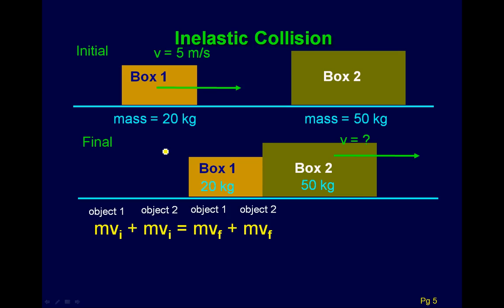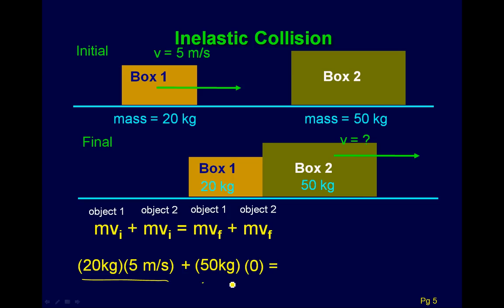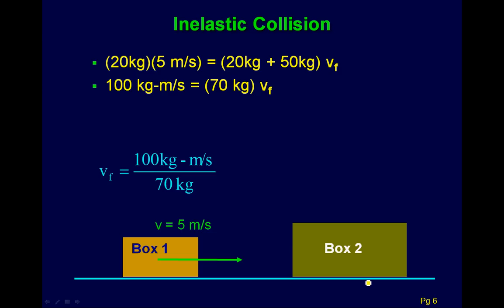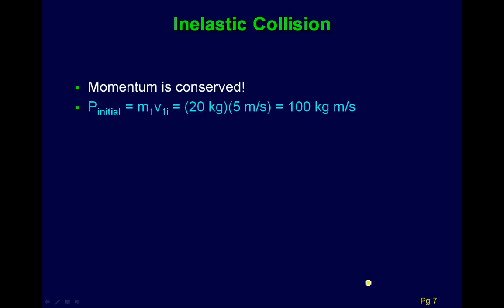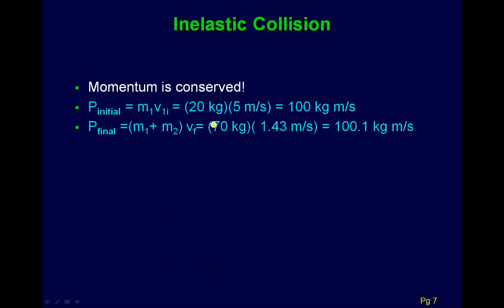We can conserve linear momentum in the x direction. The initial momentum of box one is 20 times 5, and the initial momentum of box two is 50 times 0. Afterwards, we combine their masses and treat them as one object since they stick together. Solving gives a final speed of 1.43 meters per second. You can verify this by checking that the initial and final momenta are essentially equal, aside from rounding errors.